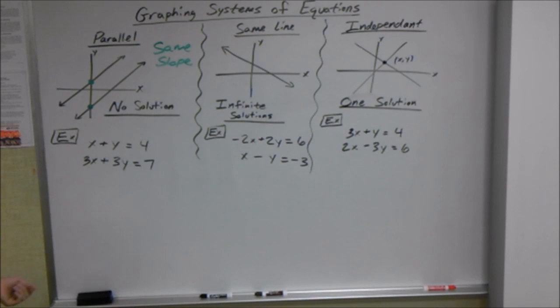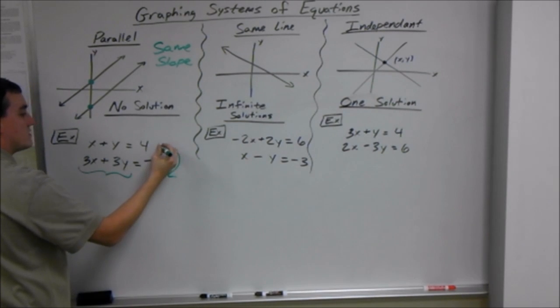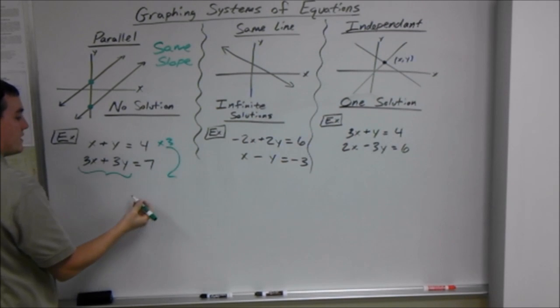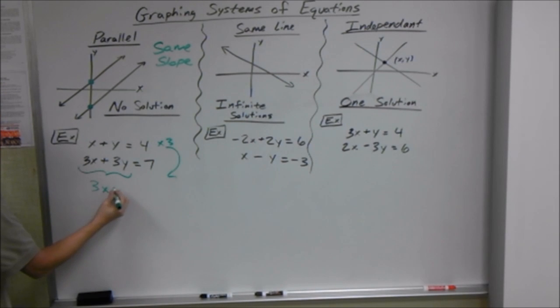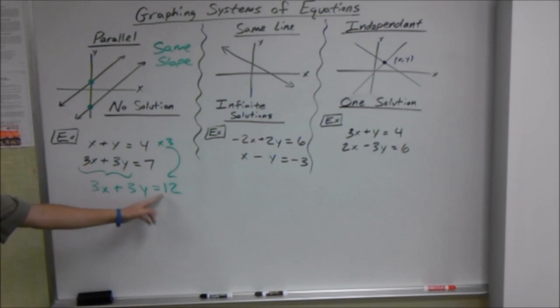And a good way to tell just by looking at the equations is they differ by a factor. Like from this equation to this equation, if you multiply this by three, it'll give you something similar. Like here, if we multiply that equation by three, it's going to give us 3x plus 3y equals 12. When these last numbers are different but everything else is the same, after you multiply by that factor, that gives you parallel lines because they have different y-intercepts.